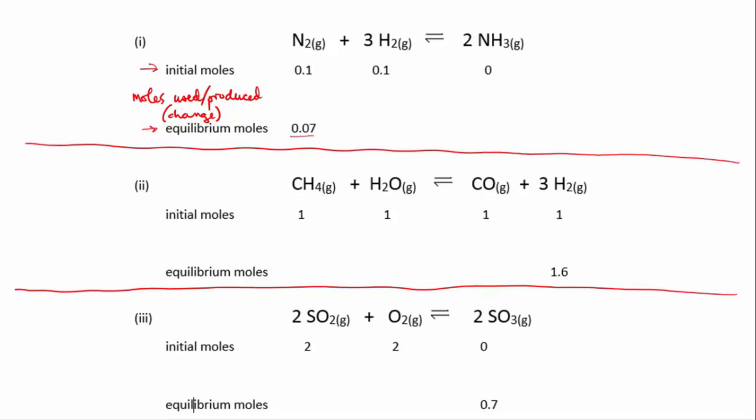We started with 0.1, we ended up with 0.07, so we must have used 0.03. We could take minus 0.03, so 0.1 minus 0.03 gives us 0.07.